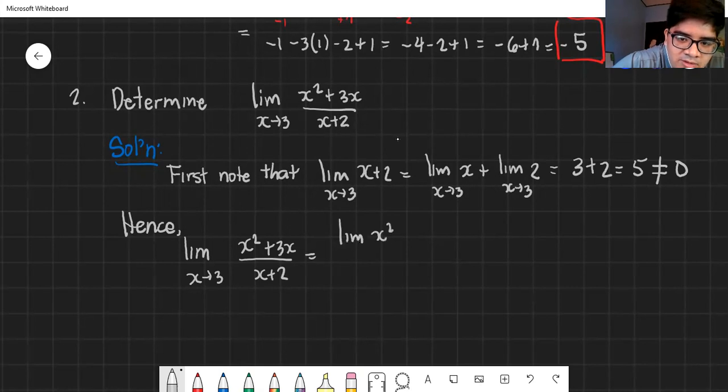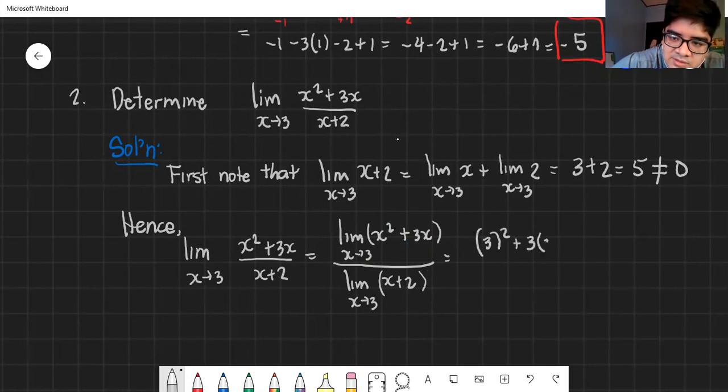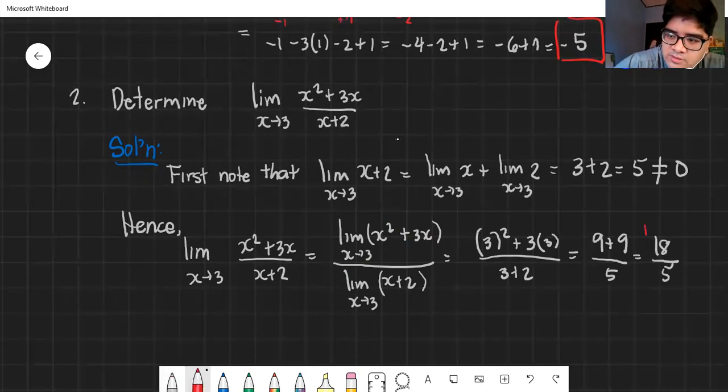Hence, we copy the given as common practice: the limit as x approaches 3 of x squared plus 3x over x plus 2. What do we do? We can now use the substitution method. Or this is the limit of the numerator as x approaches 3 over the limit of the denominator as x approaches 3. We can just substitute it. And by the way, put parentheses around your polynomials to indicate that the limit applies to the whole polynomial. What happens? We substitute: 3 squared plus 3 times 3 all over 3 plus 2. This is 9 plus 9 all over 5, or 18 over 5. So that's the final answer.